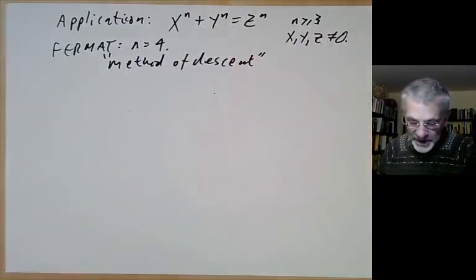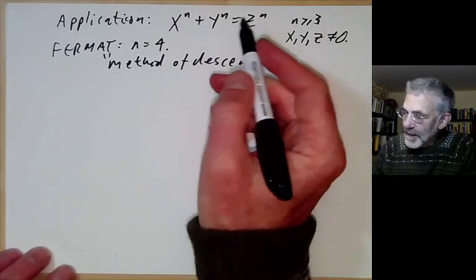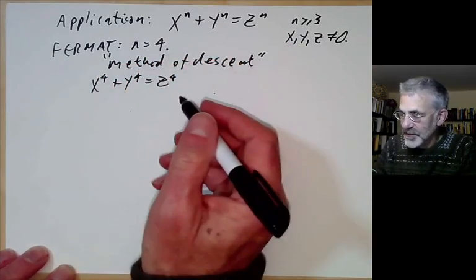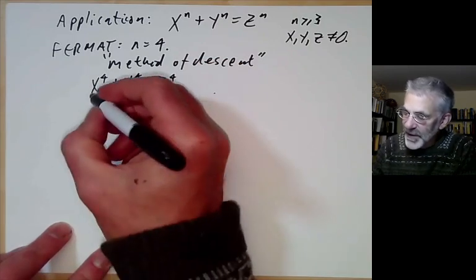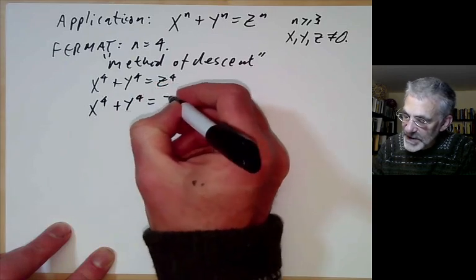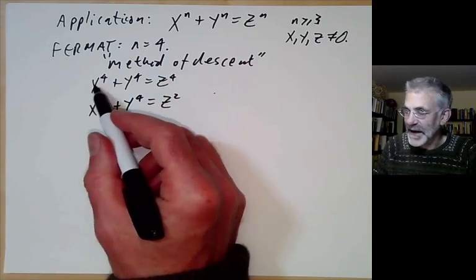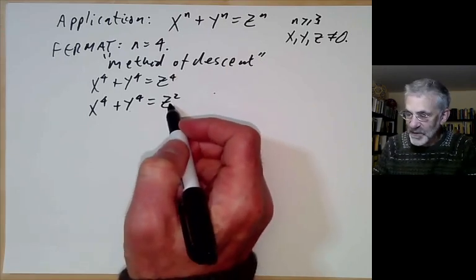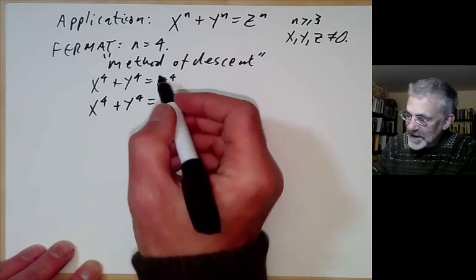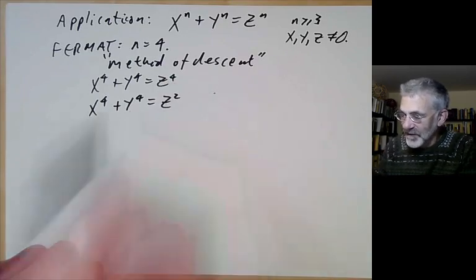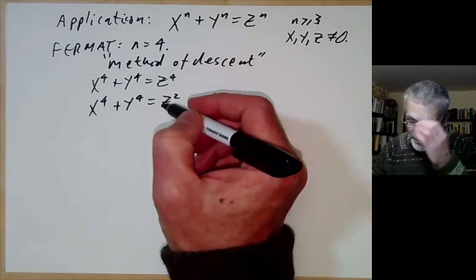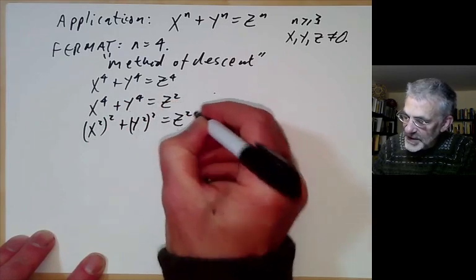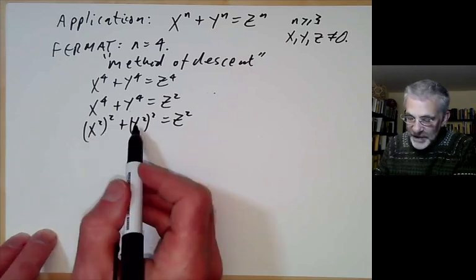What we want to show is there are no solutions of x to the 4 plus y to the 4 equals z to the 4, except for trivial ones. In fact, Fermat's method works for the more general equation x to the 4 plus y to the 4 equals z squared. We can write x to the 4 plus y to the 4 equals z squared as (x squared) squared plus (y squared) squared equals z squared — a special case of Pythagoras's theorem where two of the arguments are squares.